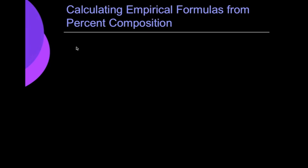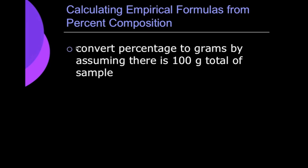Now, when we calculate the empirical formula from the percent composition, the first thing we have to do is we have to convert the percent to grams by assuming that there's 100 grams of the total sample. Basically, what that means is we take the percent sign, erase that, and we just put grams.